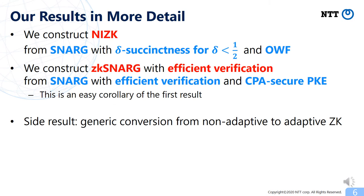These are our results. First, we construct NIZK from SNARK with delta-succinctness for delta greater than one-half, and one-way function. The second result is we construct knowledge SNARK with efficient verification from SNARK with efficient verification and CPA-secure public key encryption. This second result follows as an easy corollary of the first. Along the way, we also give a generic conversion from non-adaptive zero-knowledge to adaptive zero-knowledge for non-interactive arguments, which may be of independent interest. In the rest of this talk, I will focus on explaining our first result: NIZK from SNARK.